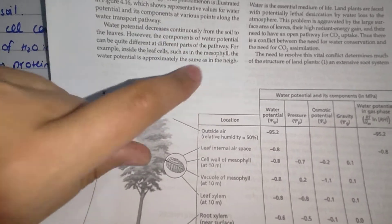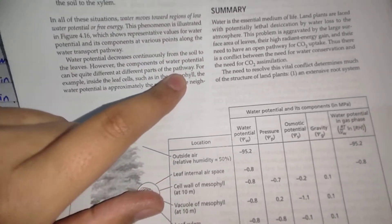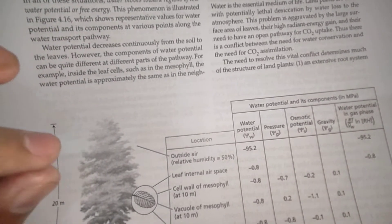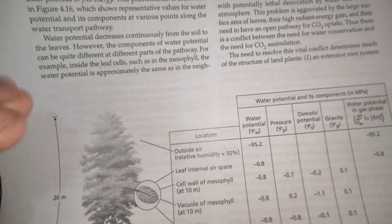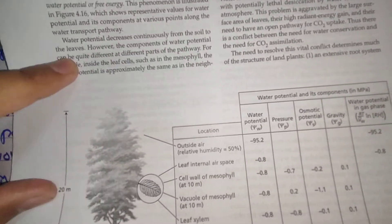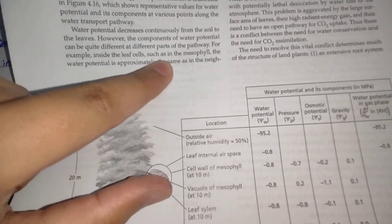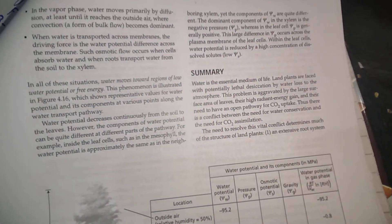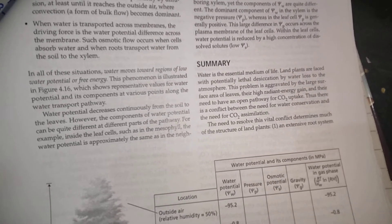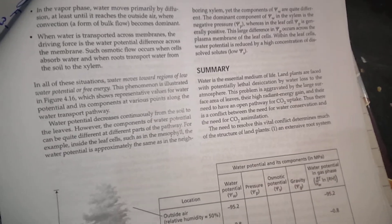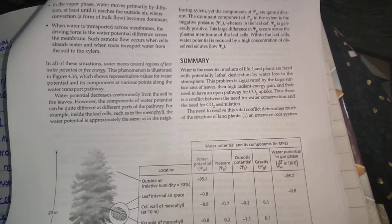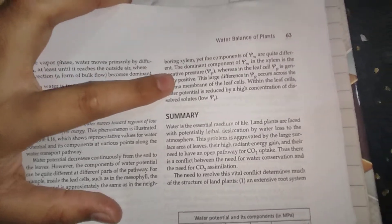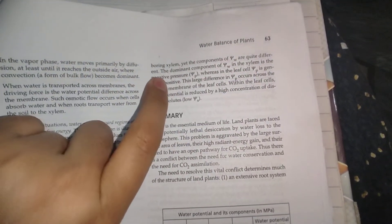However, the components of water potential can be quite different at different parts of the pathway. When transpiration occurs, the water potential at the leaf surface becomes lower compared to the rest of the plant. Inside the leaf cells — such as in the mesophyll — the water potential is approximately the same as in the neighboring xylem, as long as water has not yet been transported into the air. So the water potential is essentially the same throughout in that case.